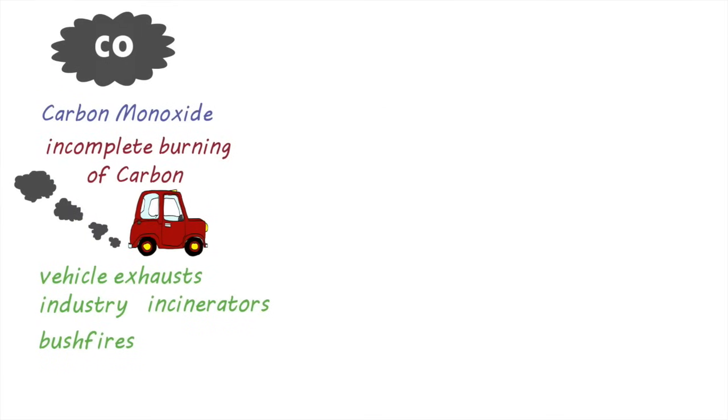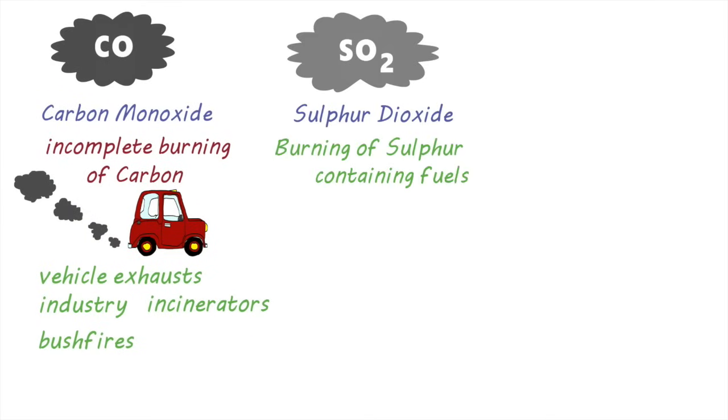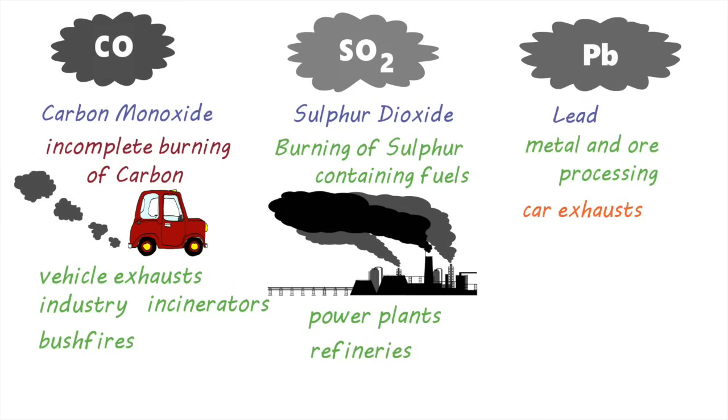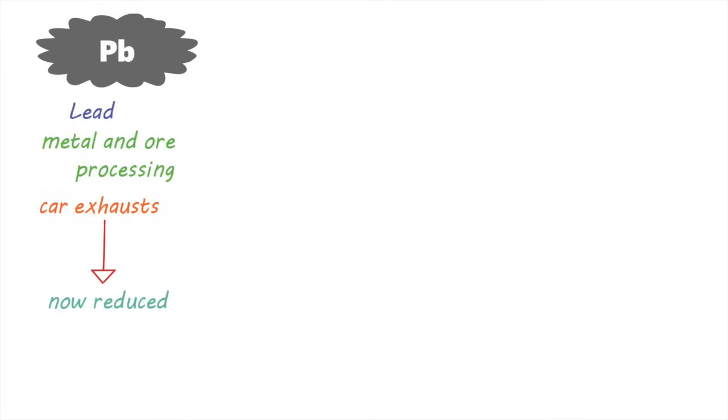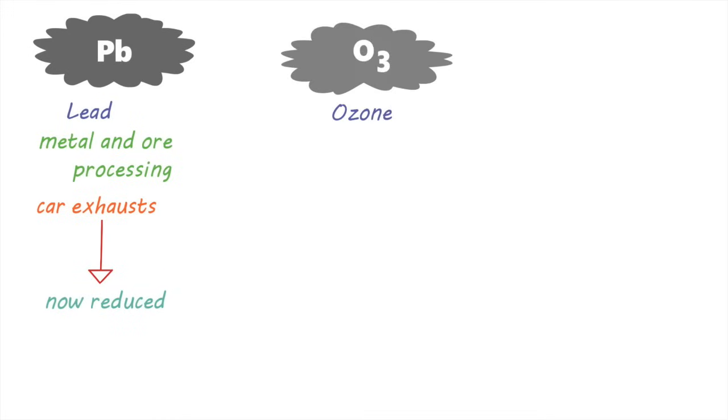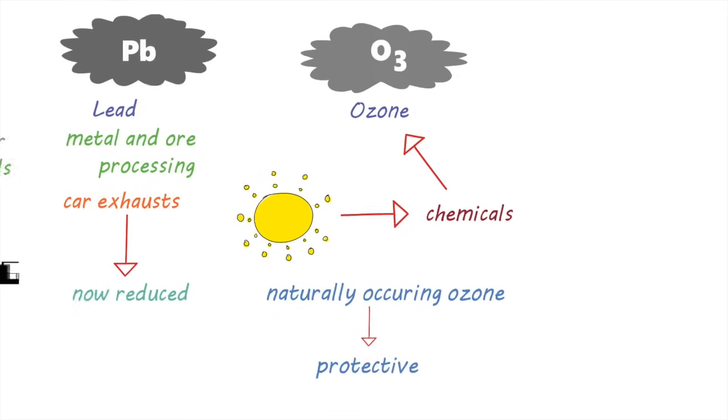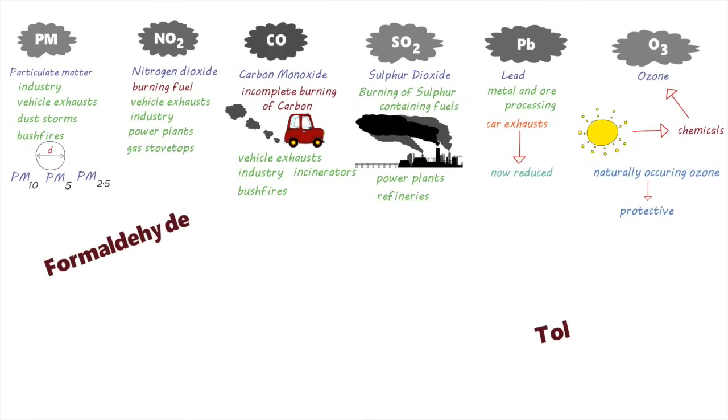Sulfur dioxide is a gas that can be produced when sulfur containing fuels are burnt during industrial processes like in power plants and refineries. Lead is produced mostly as a result of metal and ore processing. Motor vehicle exhausts used to be a major source of lead pollution, however, regulatory efforts to reduce lead in fuel has led to a massive reduction in lead emissions. Ozone is a gas that is not emitted directly to the air, but is formed as a result of sunlight acting on other chemicals in the air. Ground level ozone is a pollutant, whereas ozone that occurs naturally in the upper atmosphere has a protective function. There are hundreds of other air pollutants that can lead to adverse health effects.